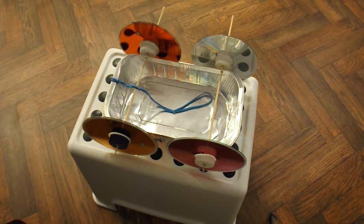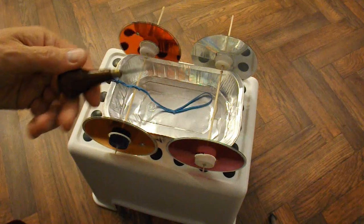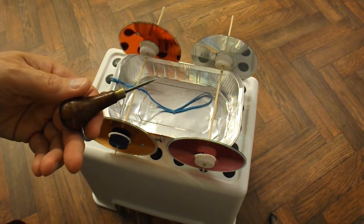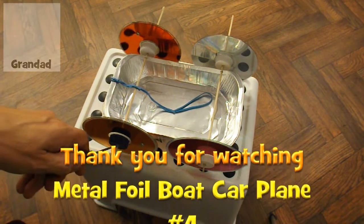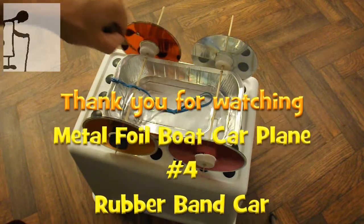And you need a pointy stick, a nail or something like this, this is called a braddle, to make the holes in the bottle tops and in the metal tray.